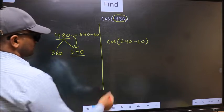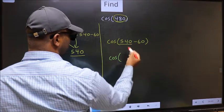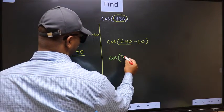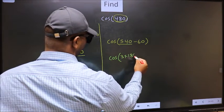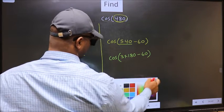Next, cos. In place of 540, now we write 3×180, minus 60.